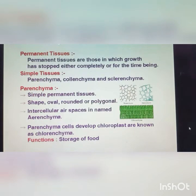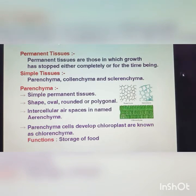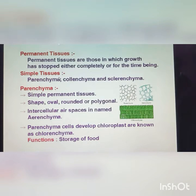Next, permanent tissues. Permanent tissues are those in which growth has stopped either completely or for the time being. That tissues are called permanent tissue. The first type of permanent tissue is simple tissue. Simple tissues are: parenchyma, colenchyma, and sclerenchyma.